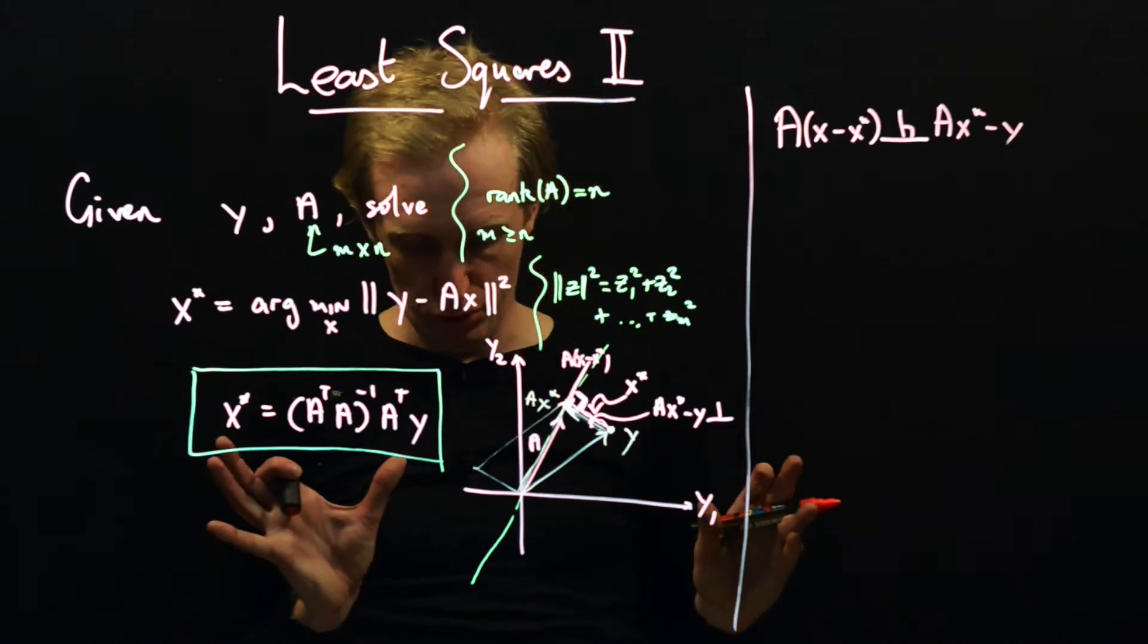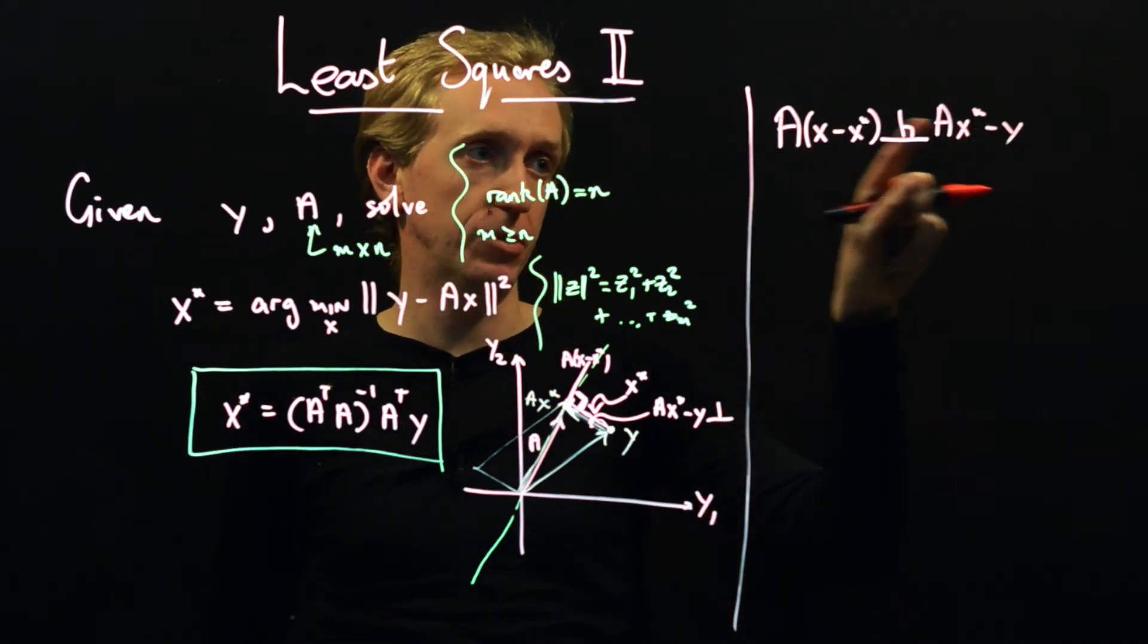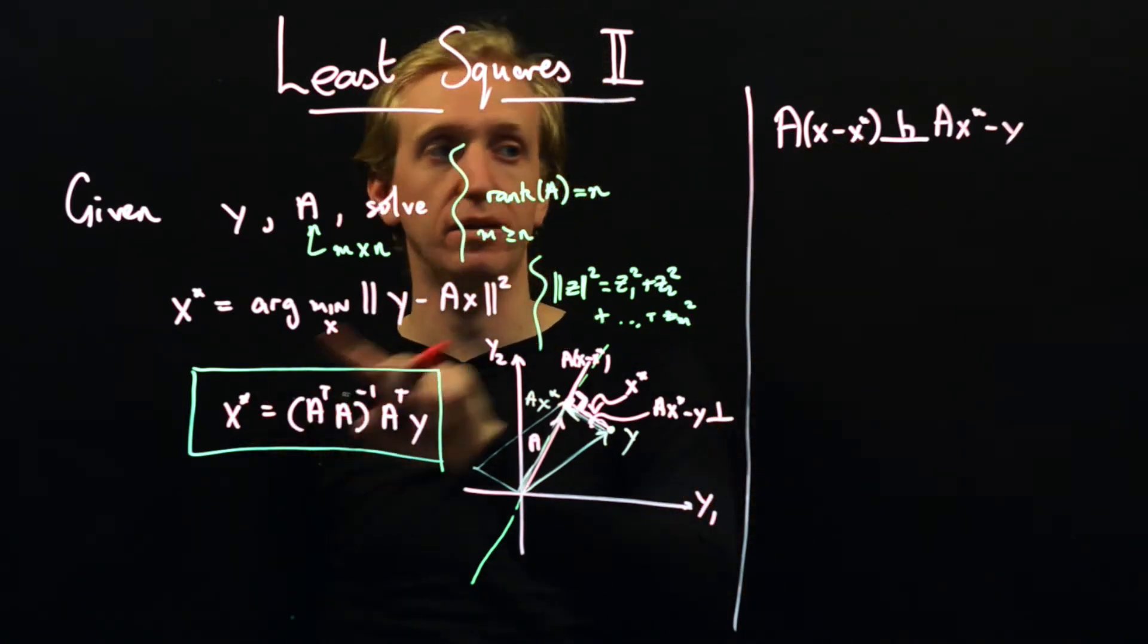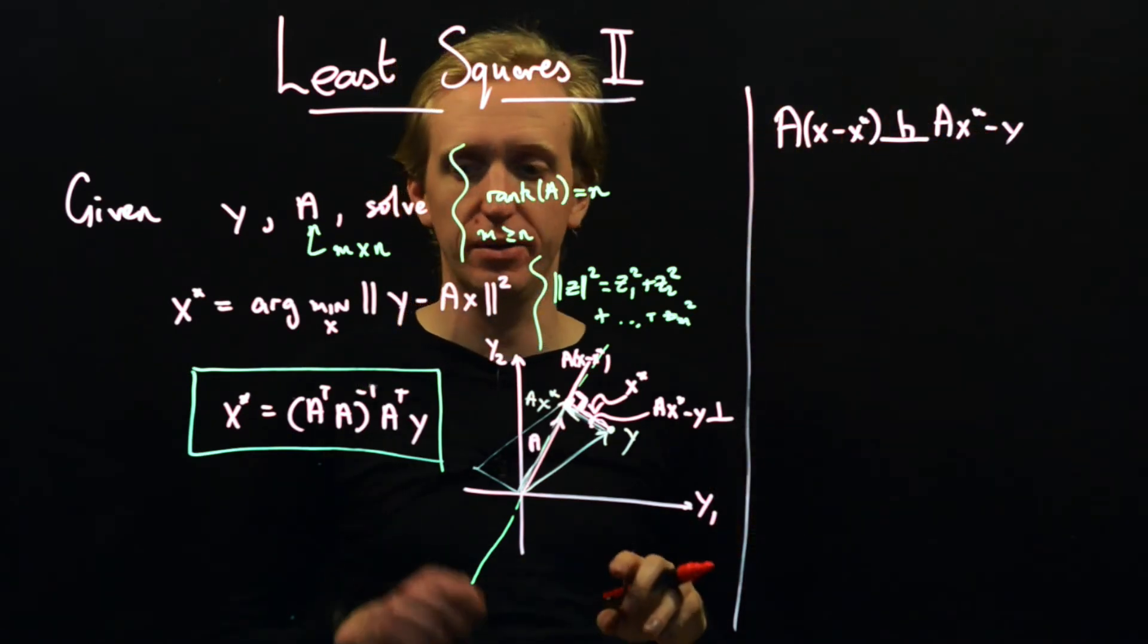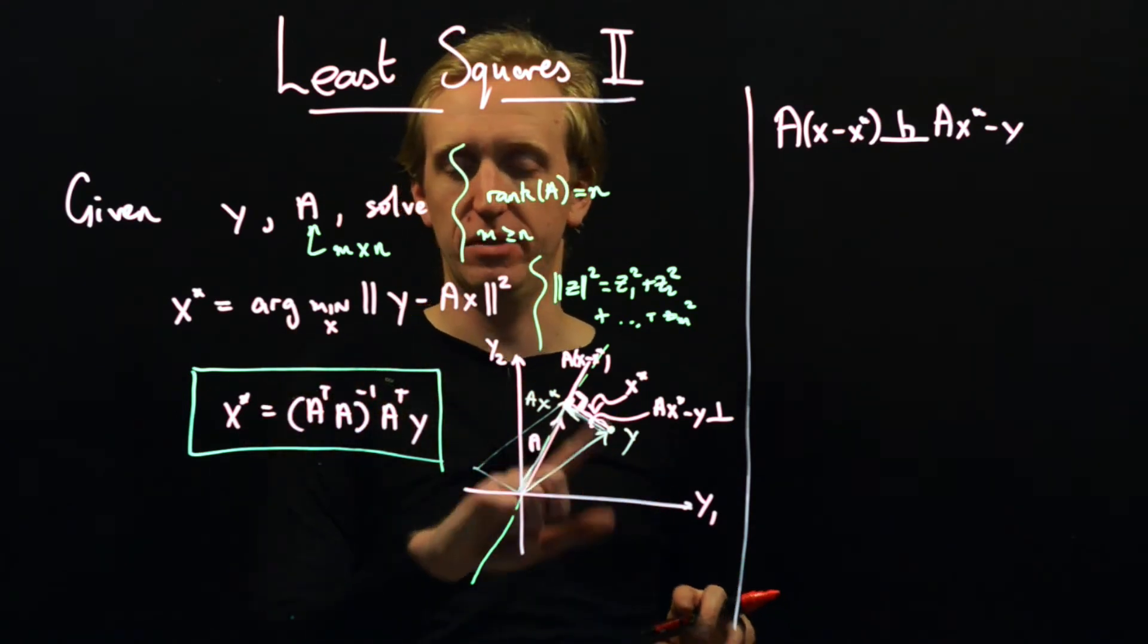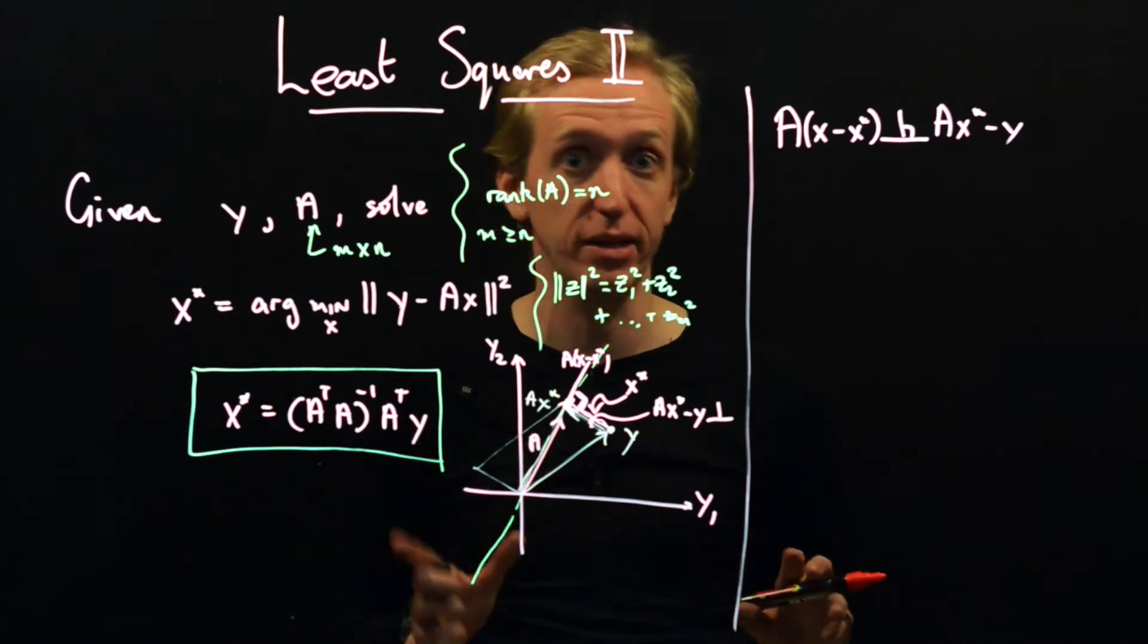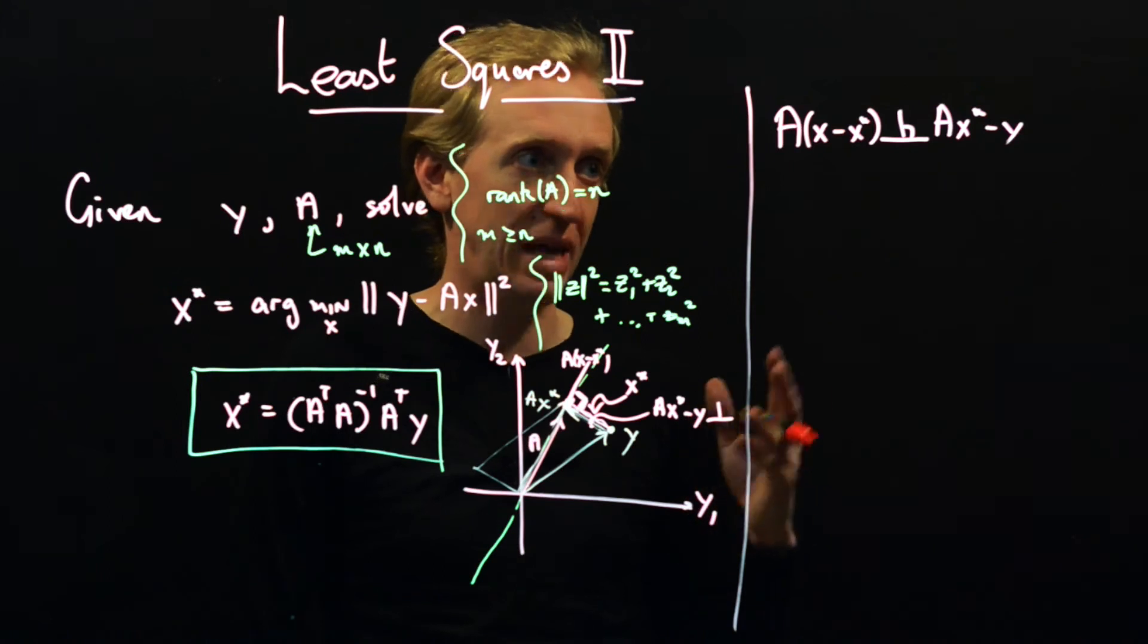So our optimality condition is that Ax minus x star is orthogonal to Ax star minus y. And so what does this correspond to? This corresponds to the inner product between these two vectors being zero. And so hopefully if this x star is optimal, we'll get that the inner product between these two things is zero. And that should, intuitively, that should tell us that that's the optimal solution. And then we'll, just like last time, we'll just verify that too. We'll kind of prove that to just make ourselves absolutely certain.